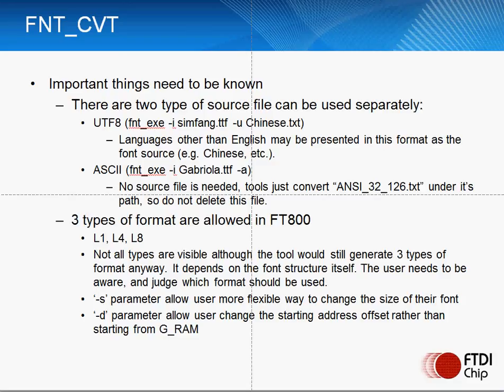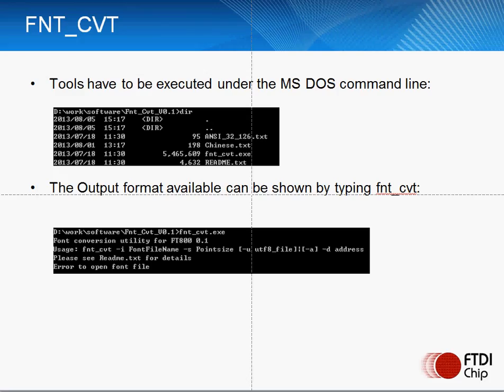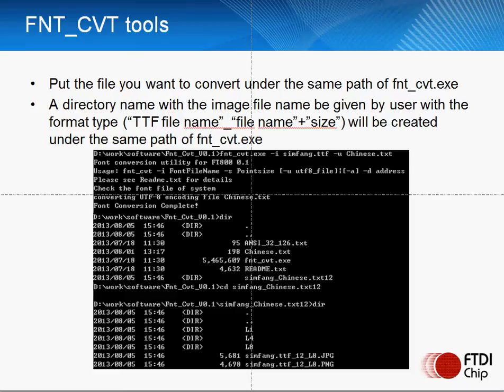With this utility, there is a -s parameter which allows you to change the size of your font, such as 12 points or 20 points. A -d parameter allows the user to change the location in graphics RAM where the output file will be stored in the FT800. This utility also runs on Windows from an MS-DOS command line window, and the source file must be in the same folder as the executable. The output is placed in its own directory, named based on the source file name and the font size.